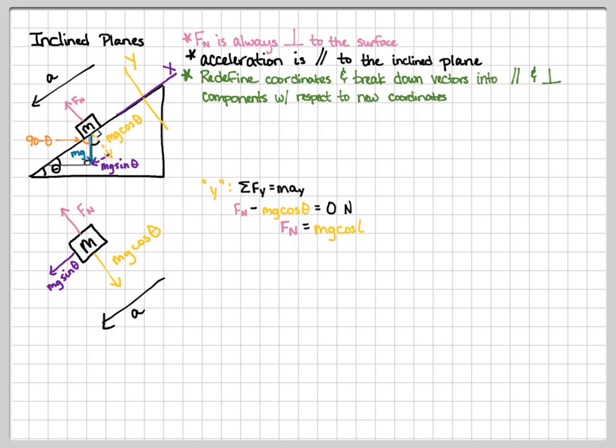So we get that the normal force is equal to mg cosine theta. Notice that it's not the entire weight. It's just a component of the weight. Okay, so now we can go and do our x. So the sum of our forces in our x is equal to mass times acceleration in the x. So the only force acting is mg sine theta going down the ramp. And that's going to be equal to the mass of the block times its acceleration.